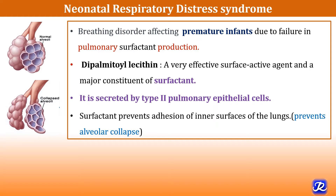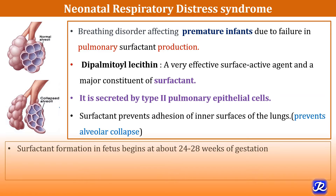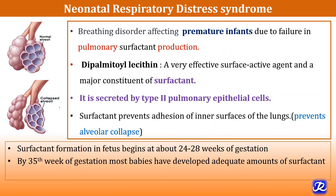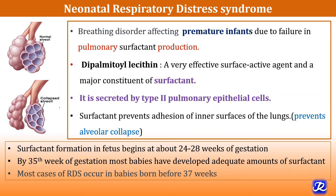The lack of oxygen can damage the baby's brain and other organs if not treated immediately. Surfactant production in the fetus begins at 24 to 28 weeks of gestation, and by the 35th week of gestation most babies have developed an adequate amount of surfactant. Most cases of RDS occur in babies born before 37 weeks of gestation.